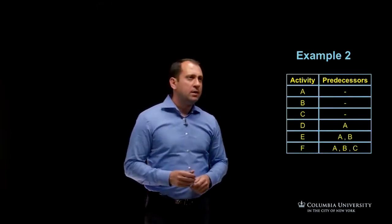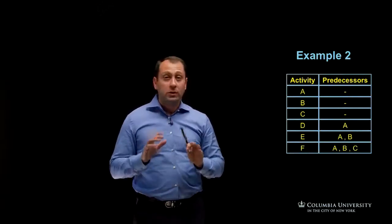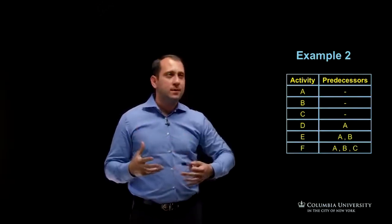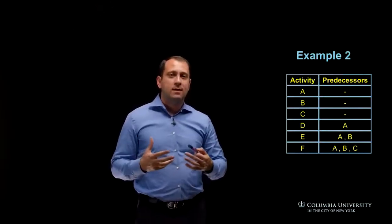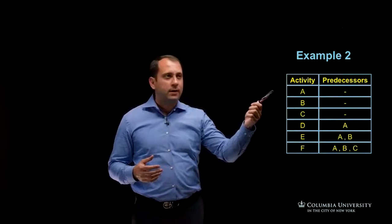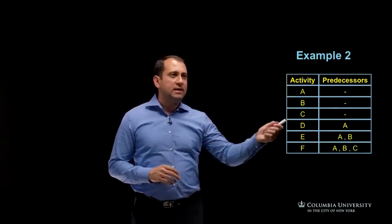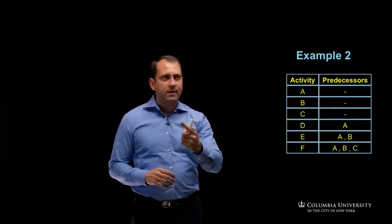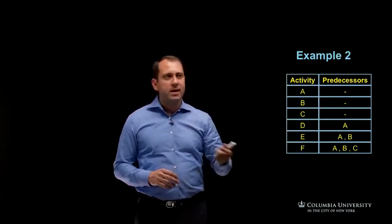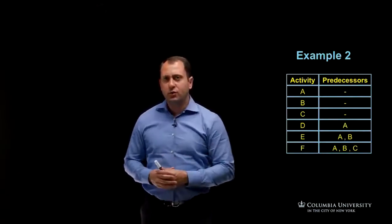For the first three activities, we don't have any predecessors. That means the beginning of the project will be from activity A, B, and C. Activity D has one predecessor of A. E has two predecessors, A and B, and F has A, B, and C. So let's try to draw that.